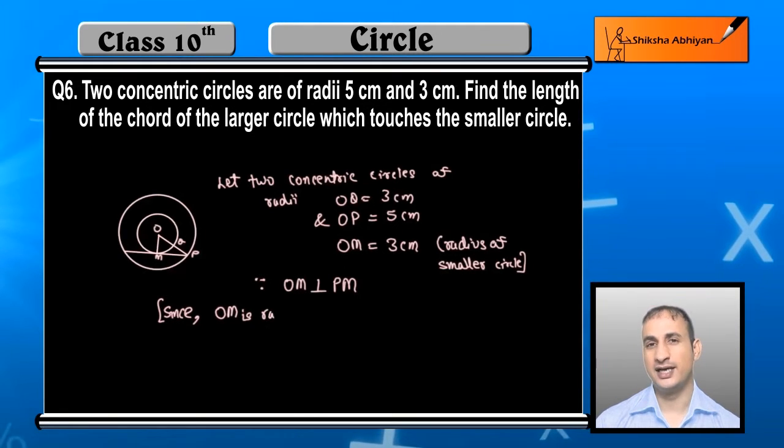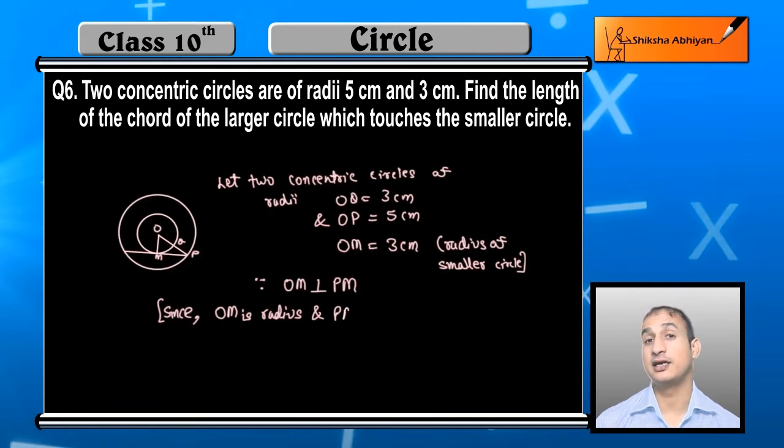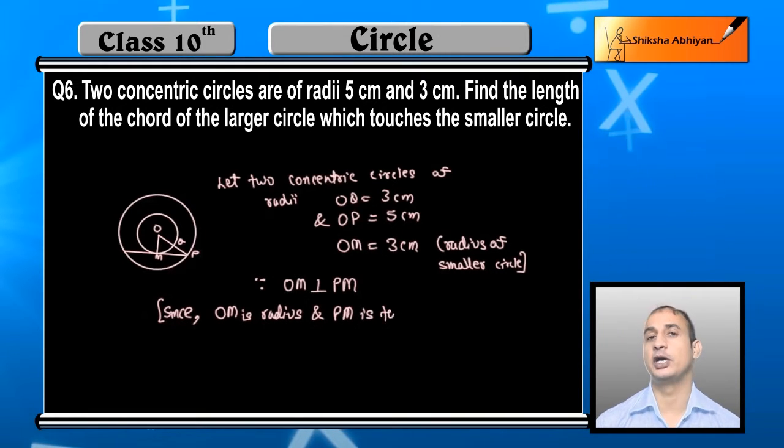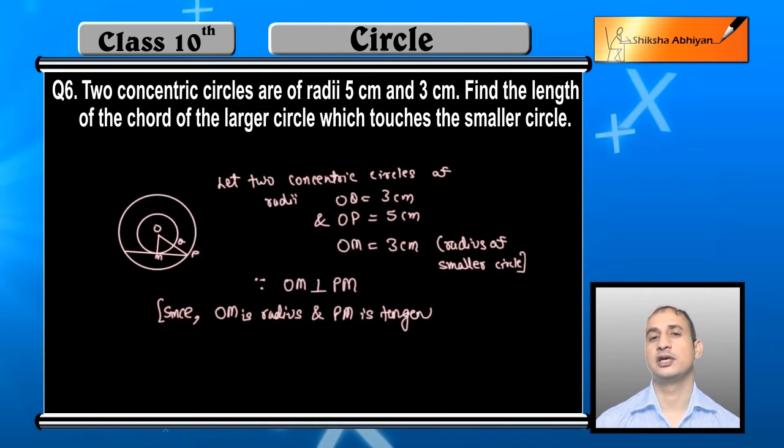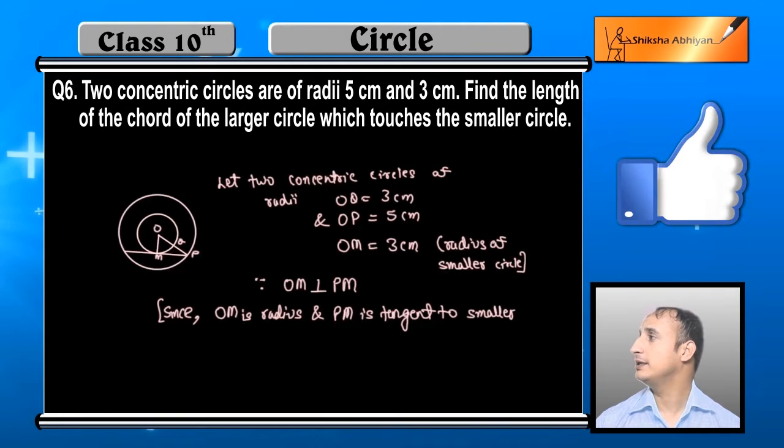Since radius OM and PM is a tangent, and we know that radius and tangent at the touching point are perpendicular to each other. Therefore, students, I can say angle OMP...